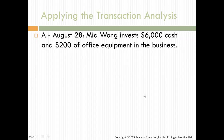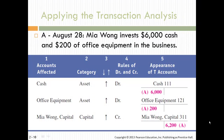Here are some transactions. On the 28th, Mia Wong invests $6,000 in cash and $200 in office equipment for a total of $6,200 invested in capital. Cash is an asset — it was debited, so that's an increase. Office equipment is an asset — it was also debited, so it's an increase. Mia Wong capital has a normal credit balance, so it was credited and also increased. Your entire accounting equation increased in this transaction.